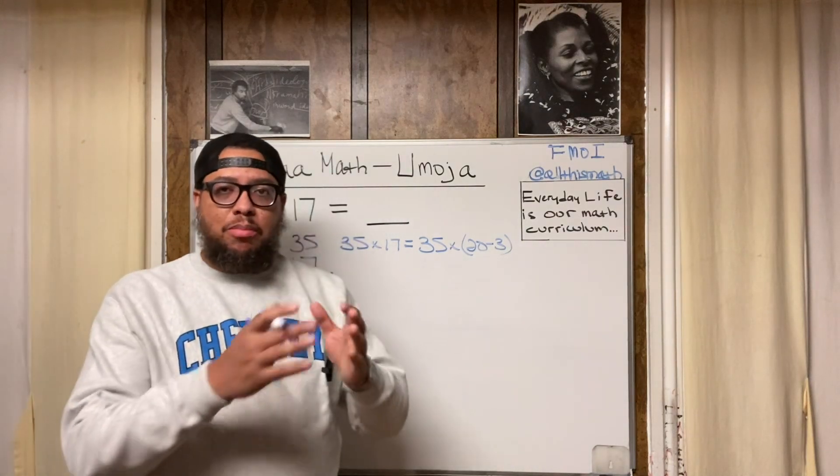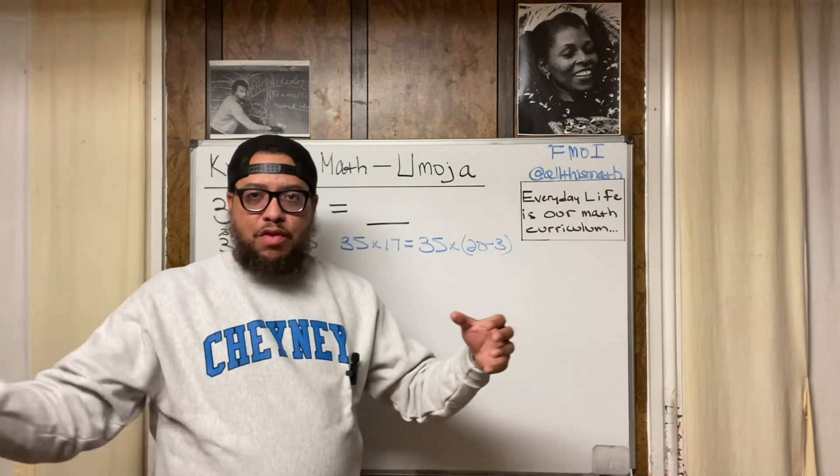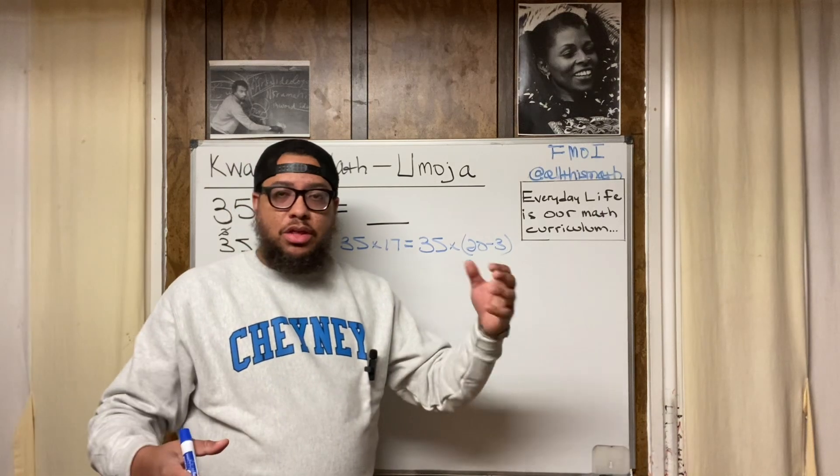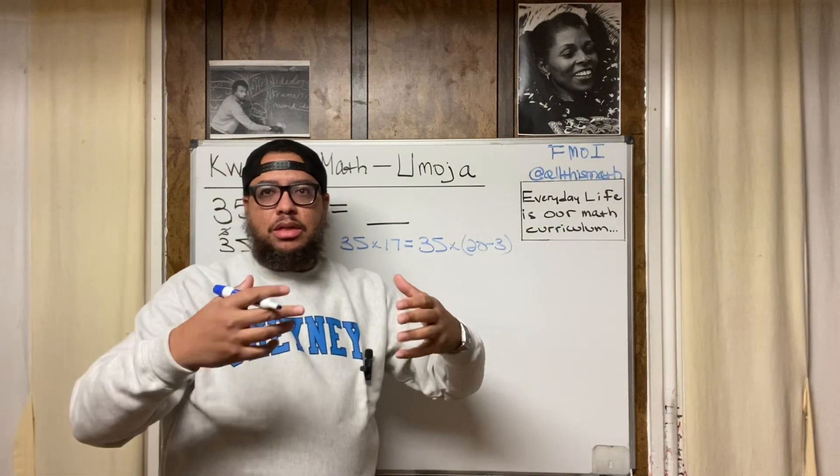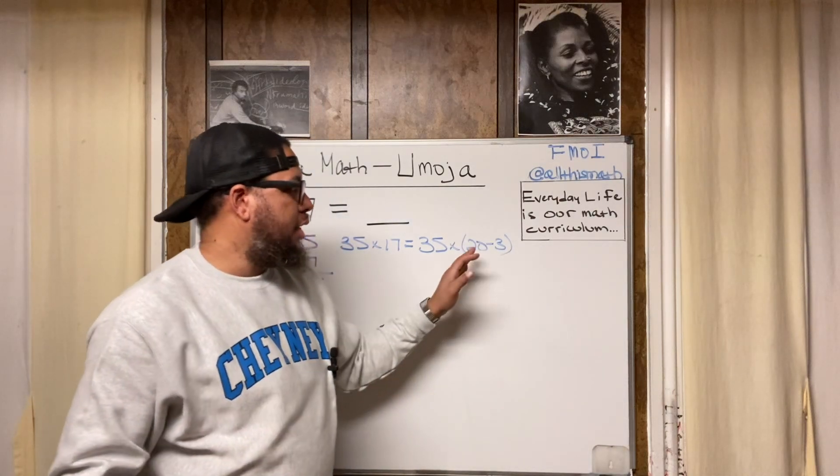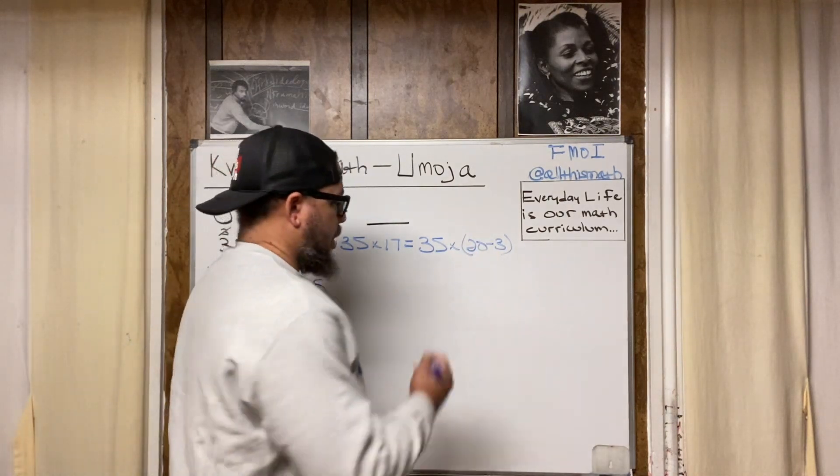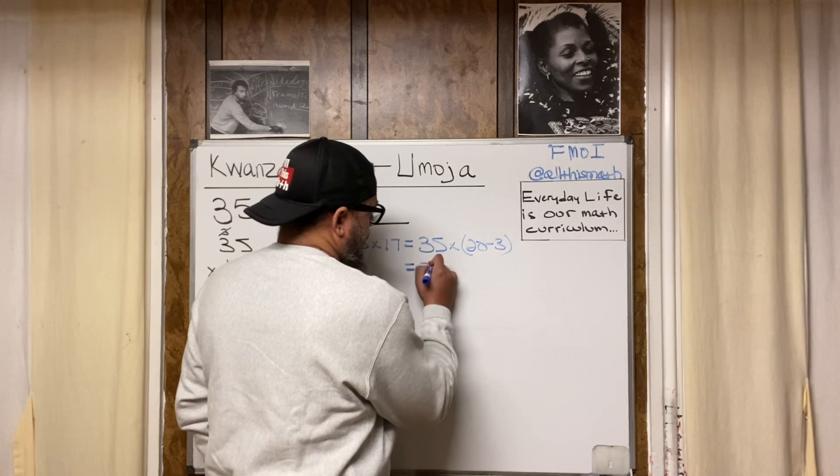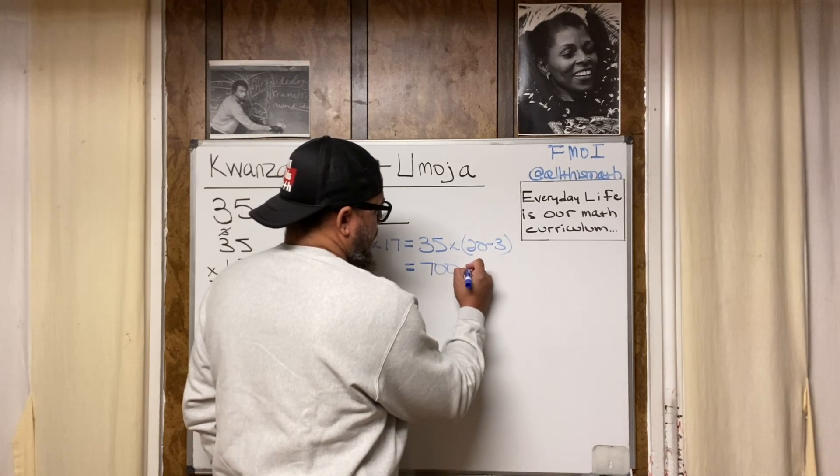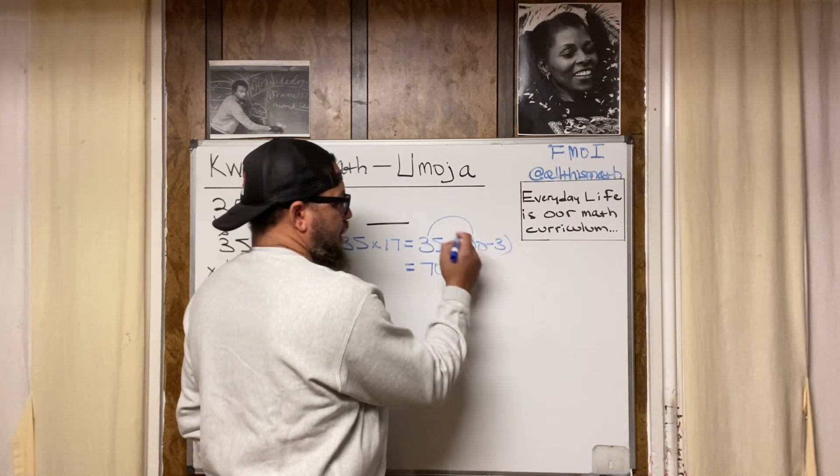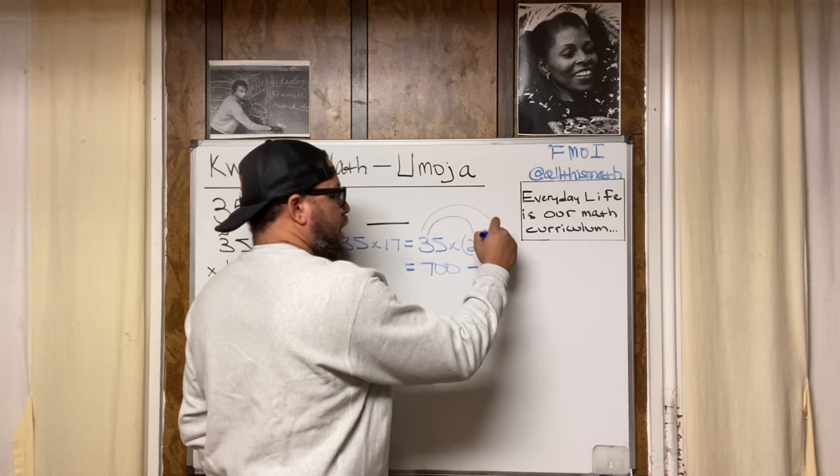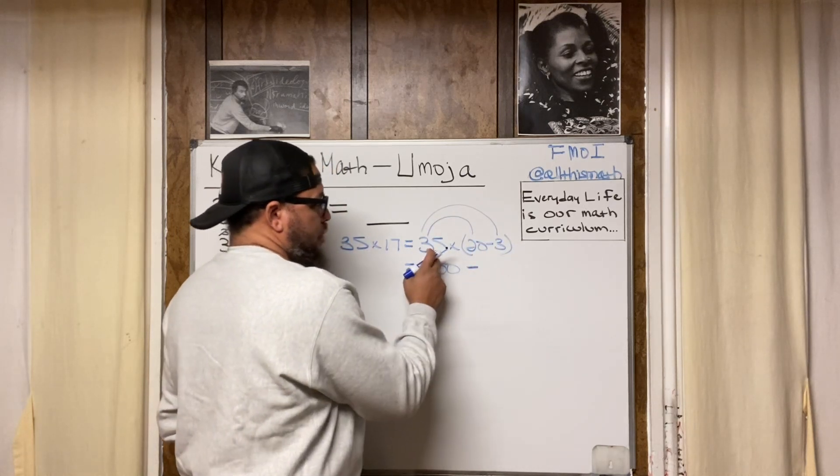How do I know that? Because if I break the 35 into two parts, 30 and 5, 30 and 5, 30 and 5, 30 times 2 is 60. 5 times 2 is 10. What's 60 plus 10? 70. So 35 times 2 is 70. Then I just attach that zero and I get 700. So I got 700. Put my minus sign because look, distributive property. 35 times 20. Don't forget to multiply by the other number inside the parentheses though. What's 35 times 3?